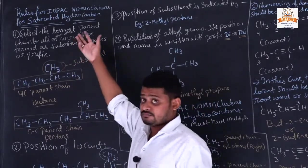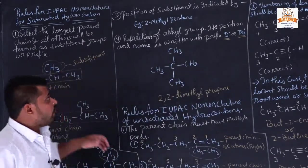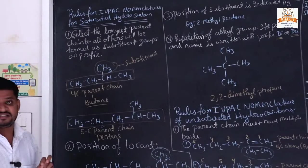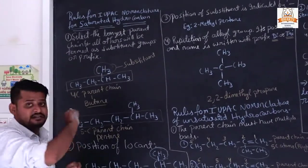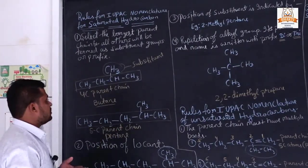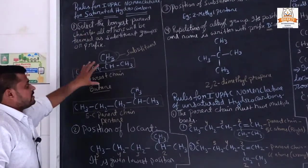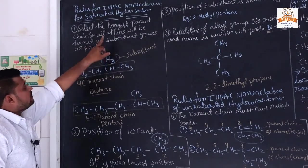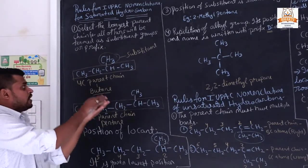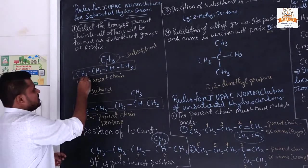For saturated hydrocarbons: the first rule is to select the longest chain in the structural formula — this is called the parent chain. The remaining atoms that are not part of the parent chain are termed substituents, also called the prefix.